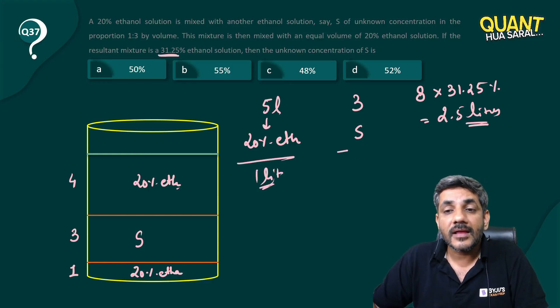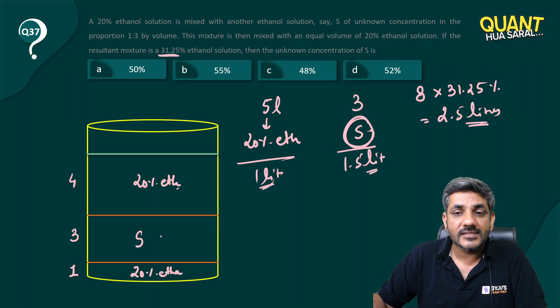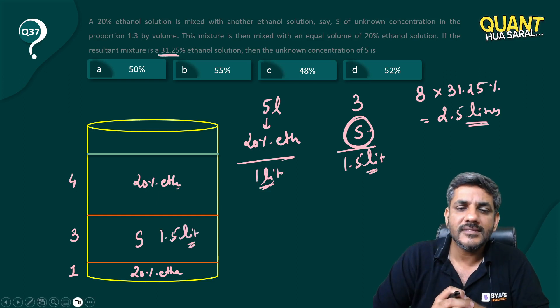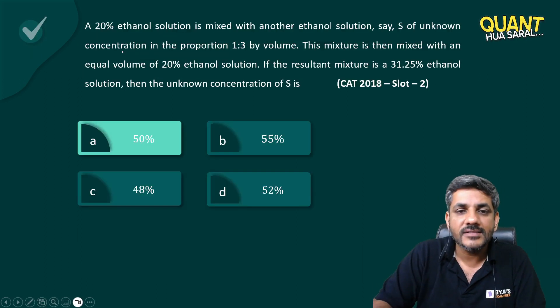So if these 3 liters have 1.5 liters of ethanol, what percentage is that? It is 50%. So that straightaway says that my answer for this question is option A, 50%.